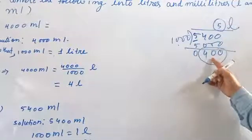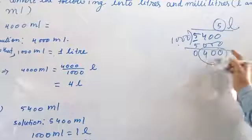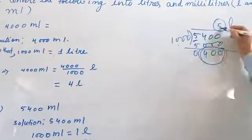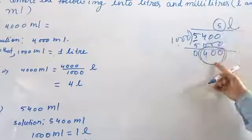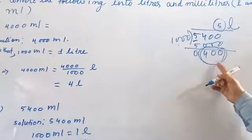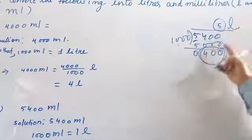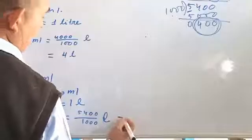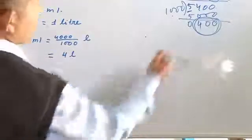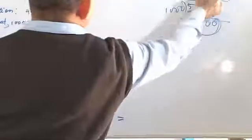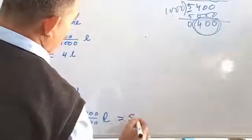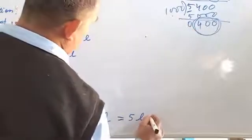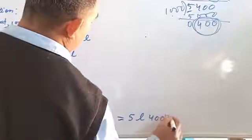There is one more number — 400. What about this 400? Yahaan toh 5 liter nikal gaya, lekin ye kya hai? Ye jo hai milliliter hai — 5 liter and 400 milliliter. This is your answer: 5 liters and 400 milliliters.